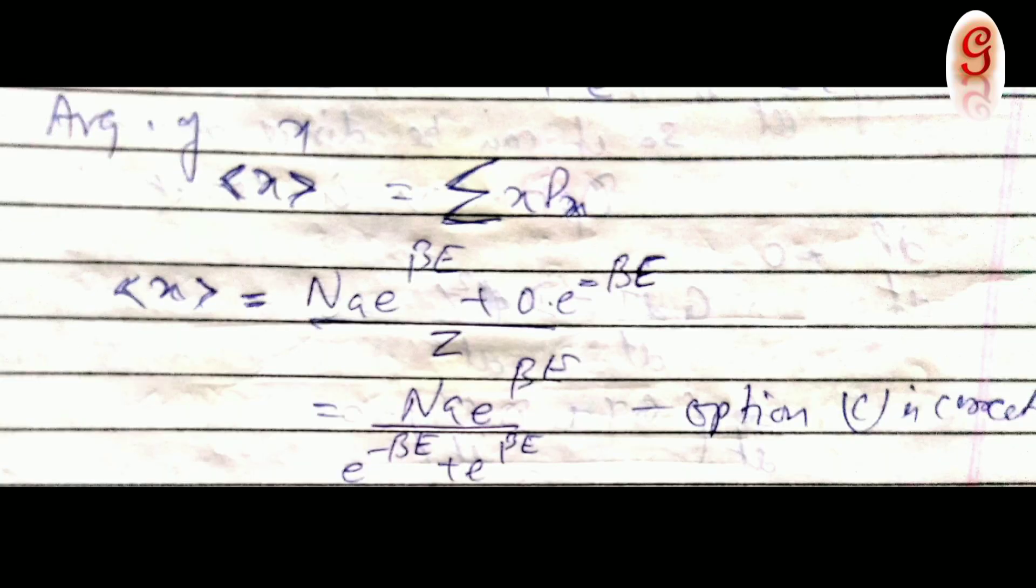Now, the average expectation of X is given as summation X times P(X), where P(X) is the probability, which is given as summation of X equals nA times e^(beta*E) plus 0 times e^(-beta*E), where n is the number of particles for energy E and 0 is the number of particles for energy minus E.